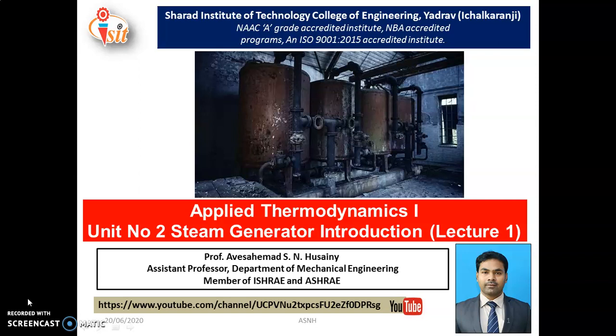The chapter name is steam generator. We start with unit number 2 and not unit 1 because first you have to clear the basic concepts of steam generation and their thermal cycles, then you will get the idea about combustion. The first unit is related with the combustion process, so before that you must know the concepts of the steam generator, steam power plant, and the thermal cycle — then it is very easy to understand the combustion process. So let us start with unit number 2, lecture number 1, and some introductory part related with the steam generator.